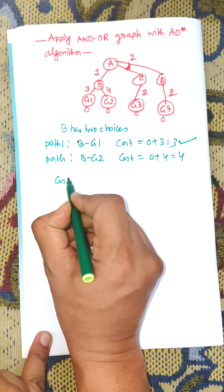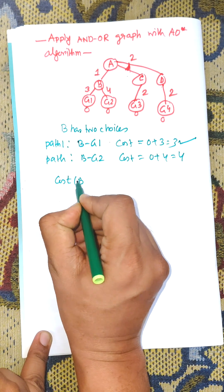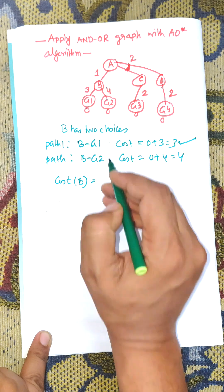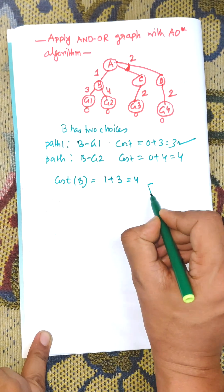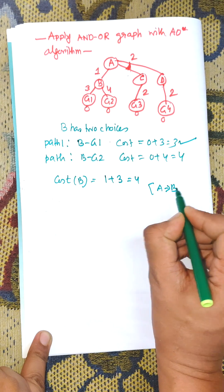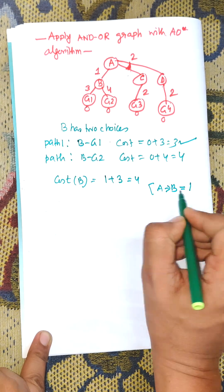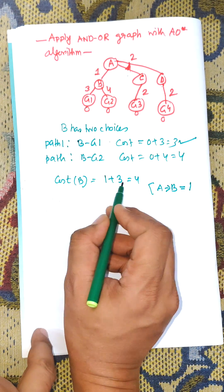So cost of B is cost of B equal to A to B cost and B to G, that is 1 plus 3 equal to 4. Cost of A to B is 1, so total cost of B is 4.